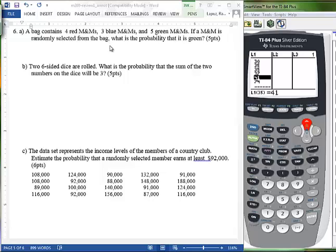So this is a simple probability problem where we need to add the total number of M&Ms in the bag. So we have three plus four plus five is twelve. And how many green M&Ms are there? There are five green M&Ms. So this would be your answer.